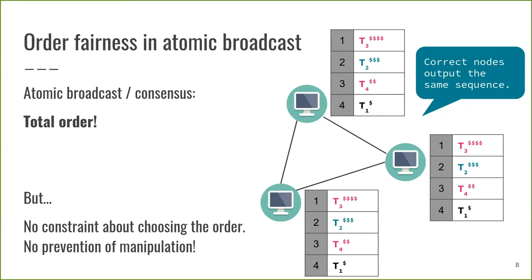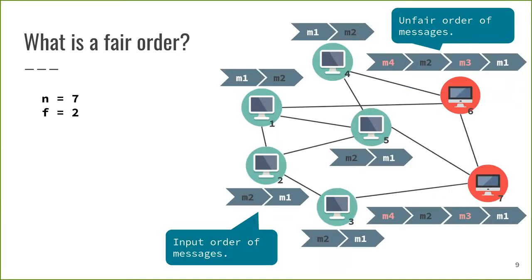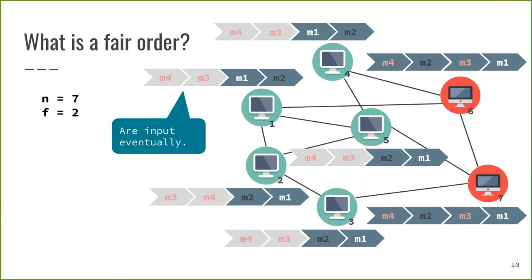Intuitively, we would consider it fair that a message received by many parties before another message will be delivered before the other message. Let's have a look on this example with seven parties where two of them, parties 6 and 7, are malicious. Every party has a local view of the input order of messages. For instance, party 2 has received message M1 before message M2. The malicious parties are now trying to insert messages M3 and M4 in a fraudulent way and broadcast them to the network. The honest parties will eventually have these messages also in their input order, but after the other messages, since they were produced and broadcast later.